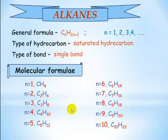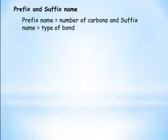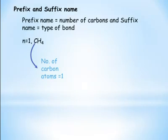The name of each compound will be given based on the number of carbons. As the number of carbon atoms goes up, names change. They all have single bonds. CH4 is the first member — n equal to one. The prefix name gives us methane.